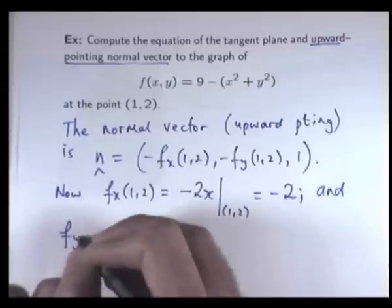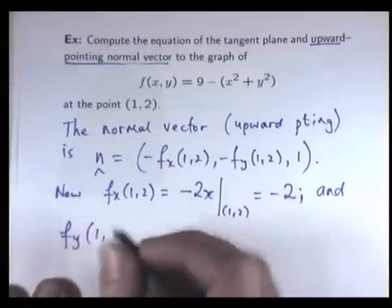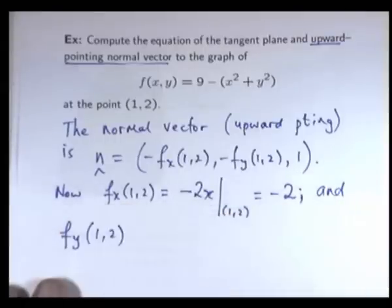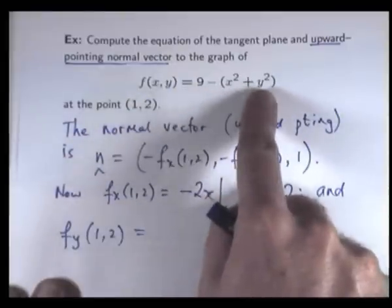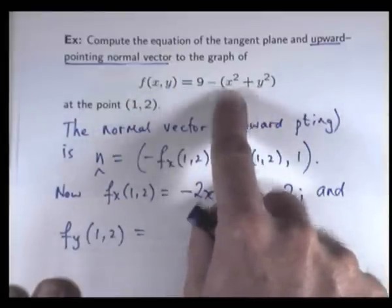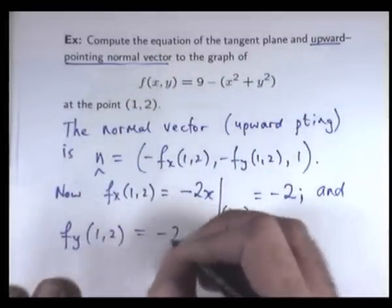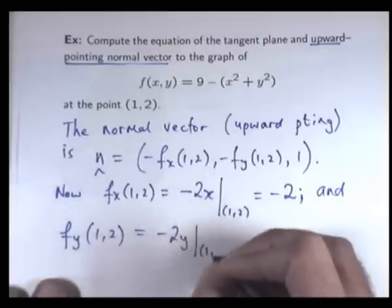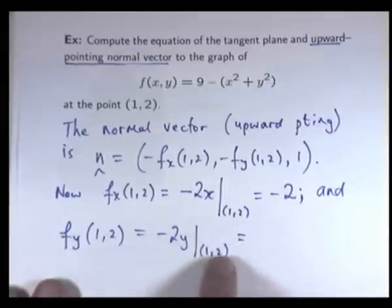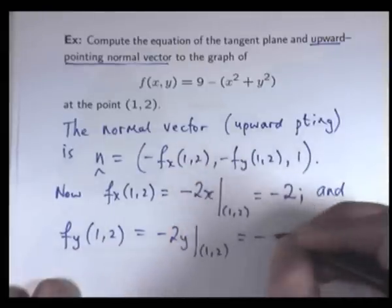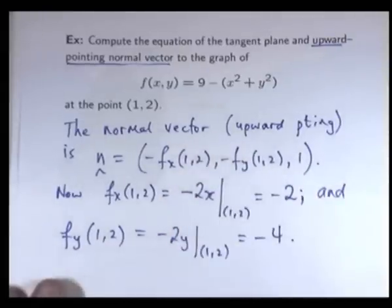Similarly, f sub y. Well, we go up here, differentiate with respect to y partially by holding x fixed, and we're going to get this. So we substitute in x equals 1, there's no x's here, y equals 2, and we'll get minus 4.